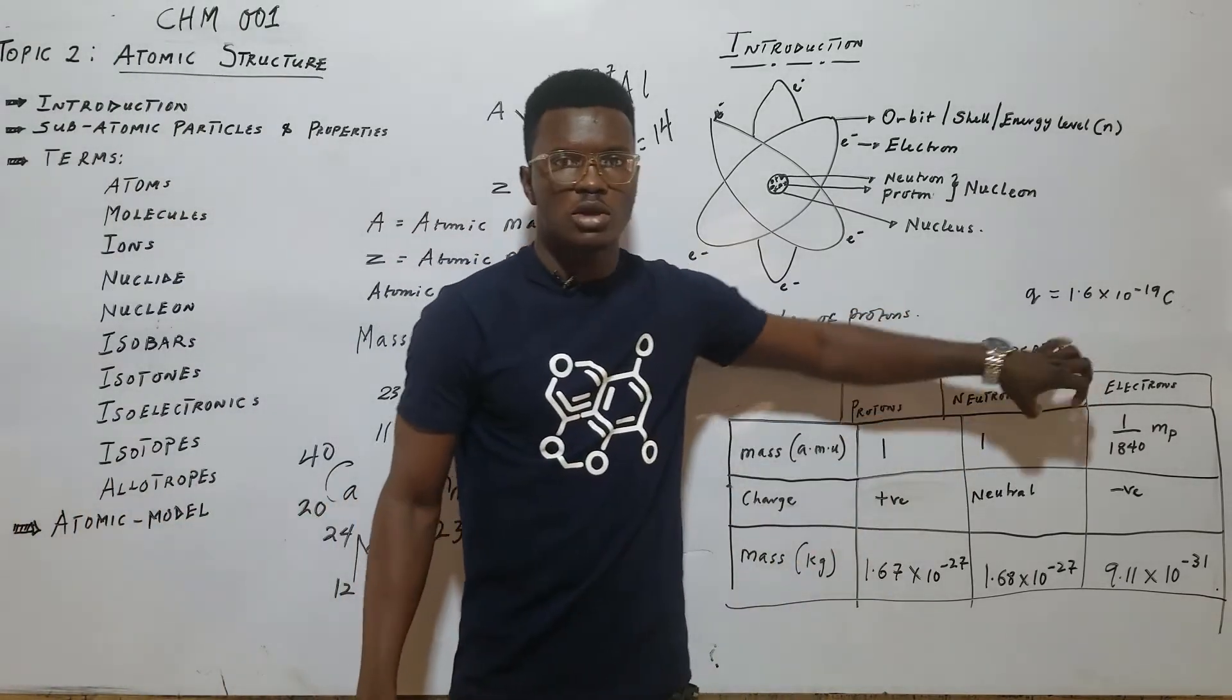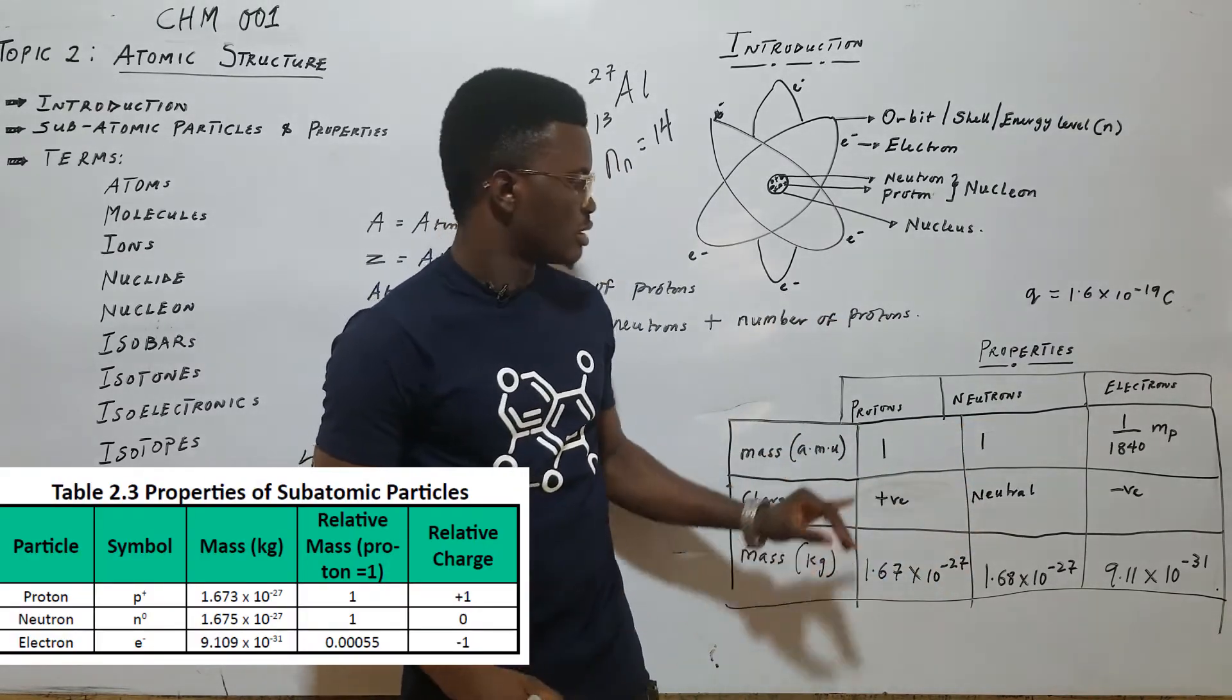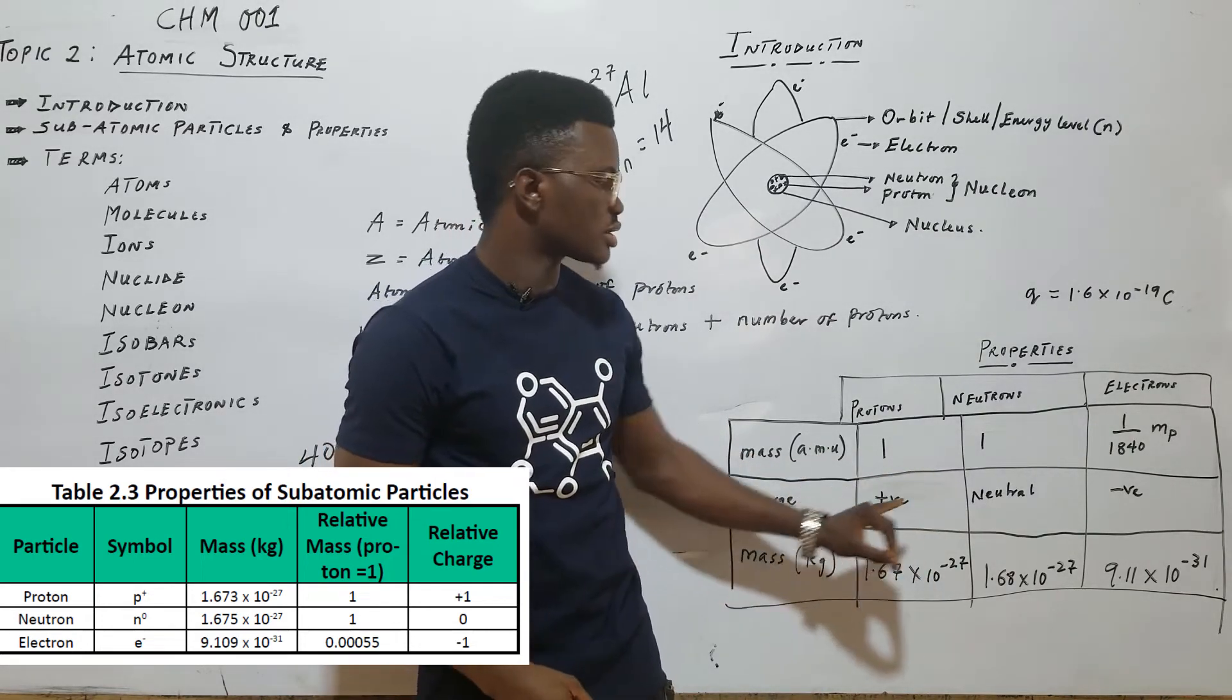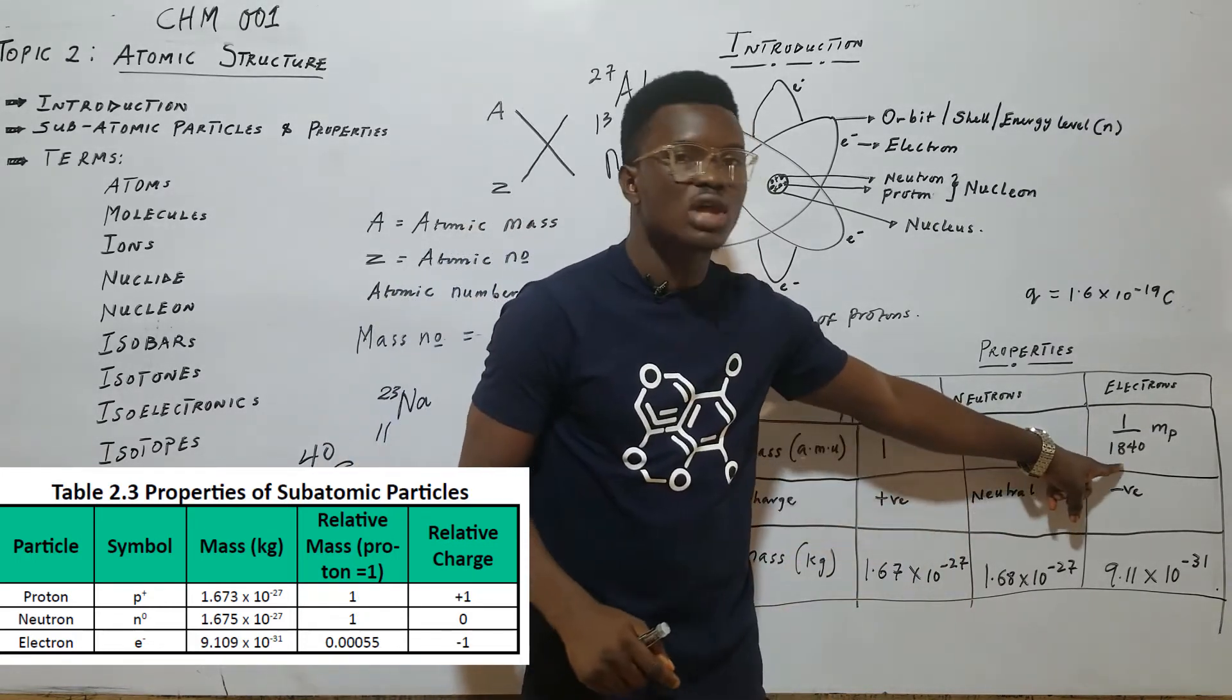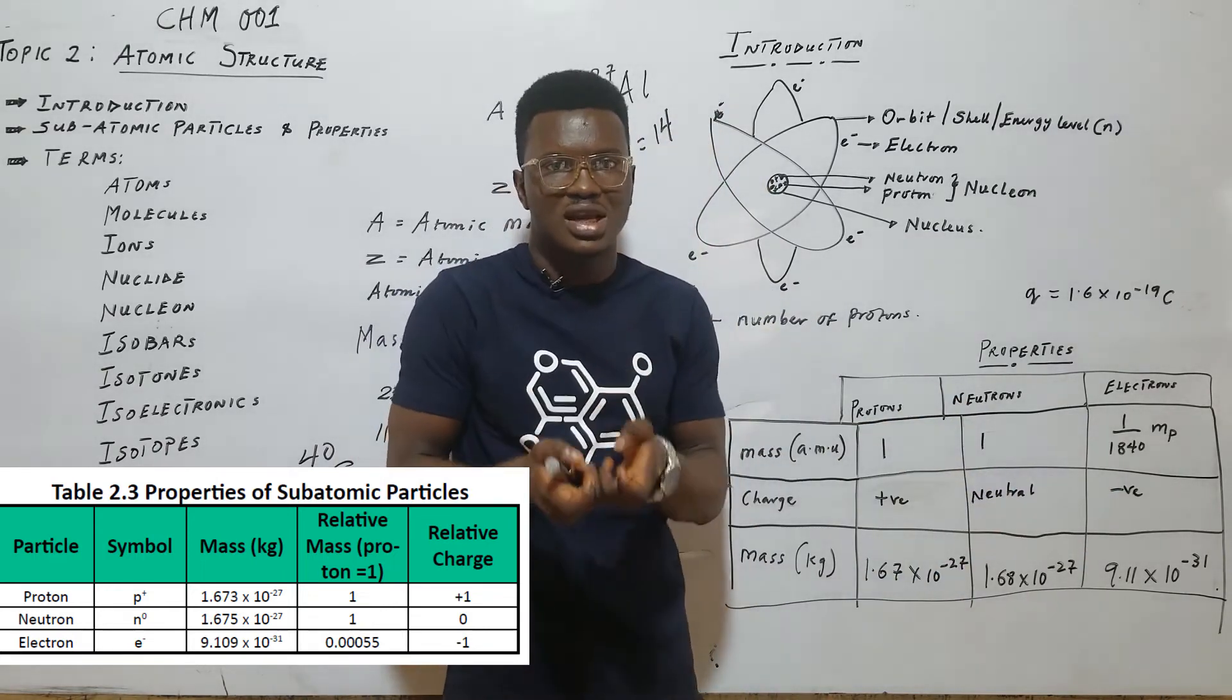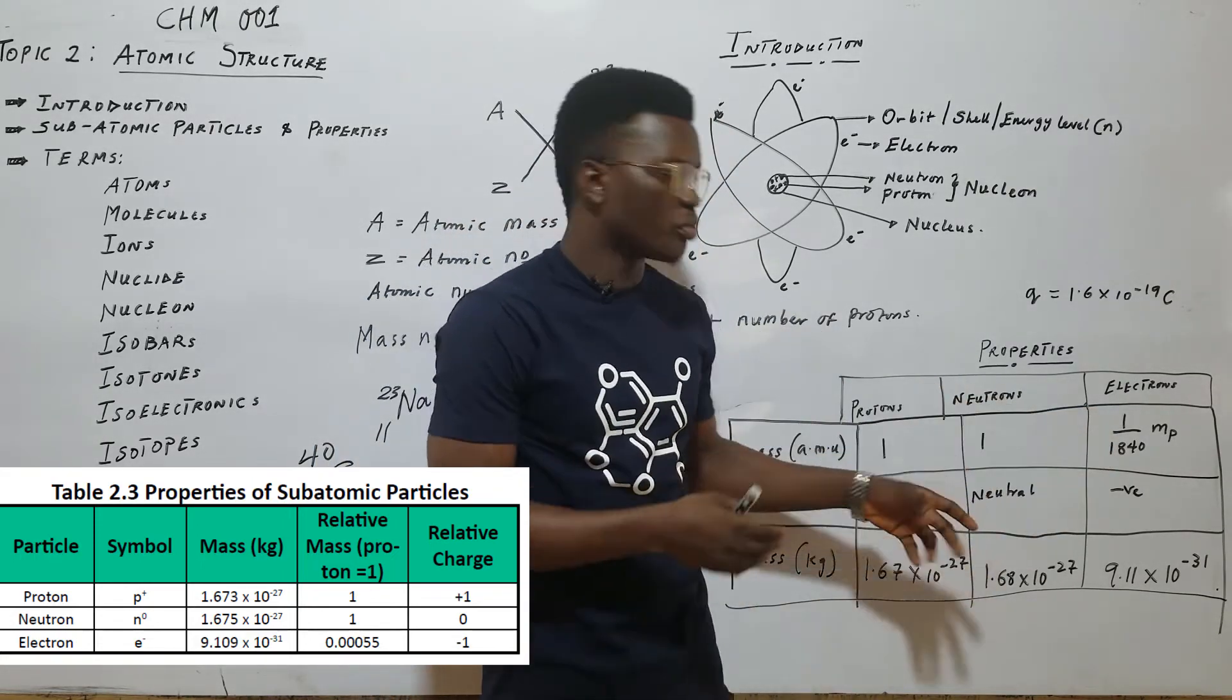These subatomic particles have some properties. In terms of their mass, proton is one measured in atomic mass units. Neutron is also one. The mass of proton and neutron, they are approximately the same. But proton is like 2,000 times greater than the mass of electron. Mass of electron is less compared to the mass of proton. That is why we say 1 over 1840, that's of proton.